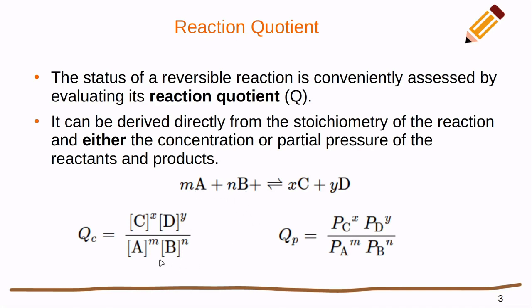In the denominator, we take the multiplication of the reactants and use their stoichiometric coefficients as exponents. If instead of concentrations we know the partial pressures, we can substitute those in following the exact same form, still using stoichiometric coefficients as exponents. To indicate which we used, we use subscripts: QC is derived using concentrations, and QP is derived using partial pressures.